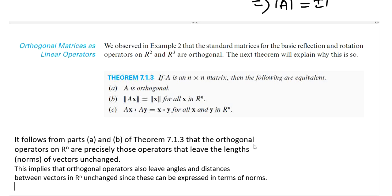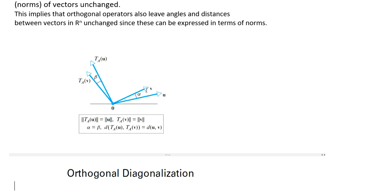Also, the distance between any two points is preserved under a transformation with an orthogonal matrix. Considering vectors V and U in the figure: when we apply the transformation to get new vectors, if the angle between U and V is alpha, the angle between the transformed vectors will also be alpha. Similarly, the distance between vectors V and U will equal the distance between the new transformed vectors.